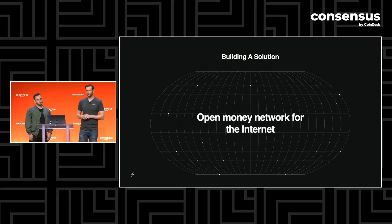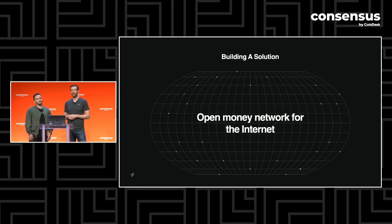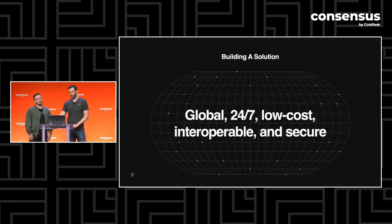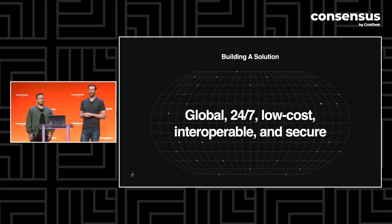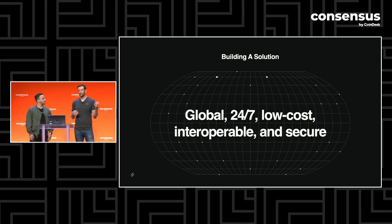So what does it look like to build this solution? We are trying to create this open money network for the Internet, where money really moves just like data moves on the Internet today. Anywhere a TCP packet can go, money should be able to go. This should be truly global, 24/7, 365. You shouldn't have business hours only. It should be extremely low cost — ideally negligible fees — and an open, interoperable protocol where anyone can plug into it. It's not just the banks, it's not just one app — anything can talk to one another using the same protocol.